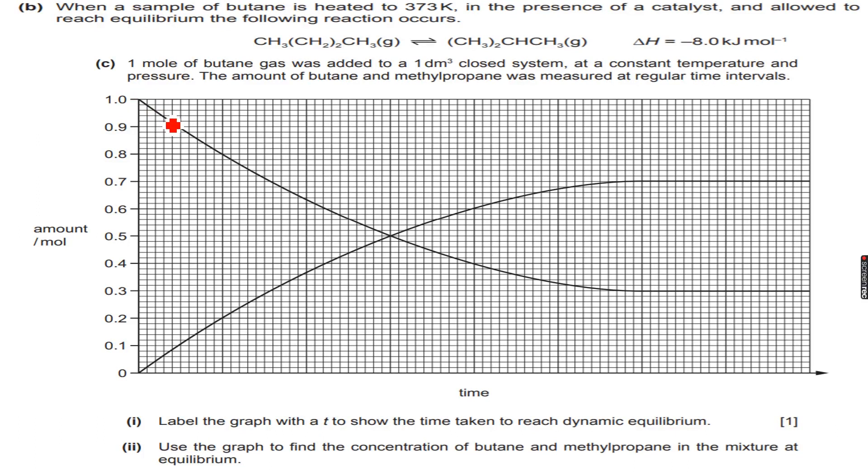The question says 1 mole of butane gas was added to a 1 dm³ closed system at a constant temperature and pressure. The amount of butane and methylpropane was measured at regular time intervals.